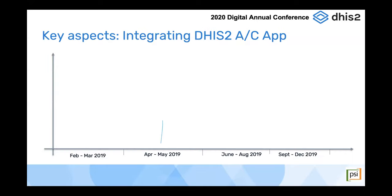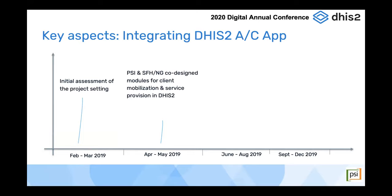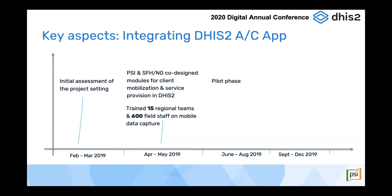During integration, we first did an initial assessment of the project setting in February and March 2019. Then, together with the Society for Family Health in Nigeria, we co-designed modules for client mobilization and service provision in DHIS2. We trained 15 regional teams and about 600 field staff on mobile data capture, all between April and May 2019. The team then went on a pilot phase in June through August 2019, followed by a scale-up phase in September through December 2019.